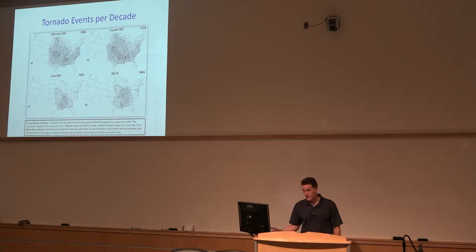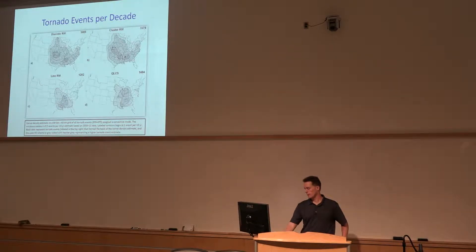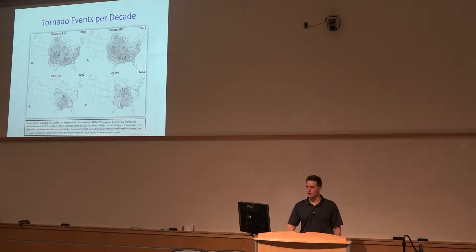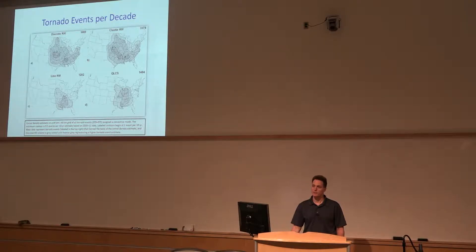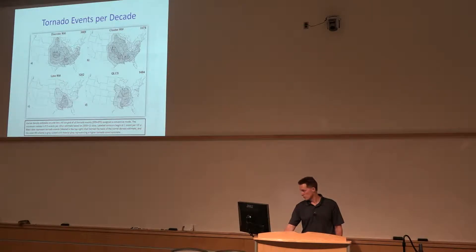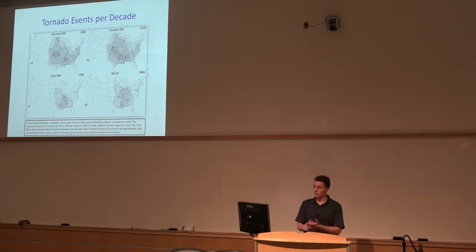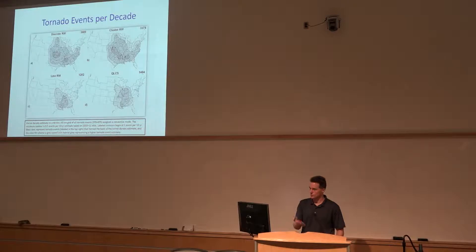We can break it down by the various storm modes and what it looks like spatially. For discrete right-moving storms, as you would expect, that's more of a central US phenomenon, though we see a corridor extending down into the northern Gulf Coast states — so-called Dixie Tornado Alley. The same sort of thing with cluster right movers: they're much more common in areas where tornadoes are most common. It's not an accident that where supercells tend to occur, that's where tornadoes tend to occur.